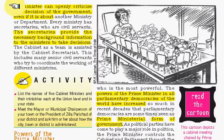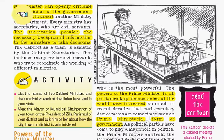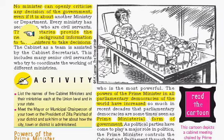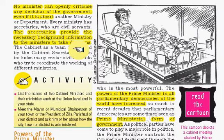No minister can openly criticize any decision of the government, even if it concerns another ministry, as it would show a lack of confidence among ministers. Secretaries, who are usually civil servants, provide the necessary background information to ministers to help them take decisions — illustrating the role of permanent executives.